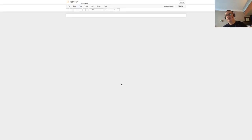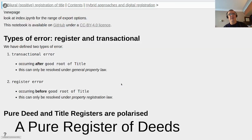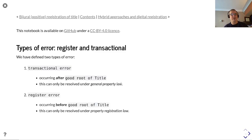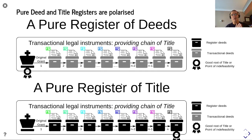We have introduced two deed types: transactional deeds and registered deeds. These result potentially in two types of error: transactional error and register error. Transactional errors occur after the good root of title and can only be resolved under general property law. A register error occurs before the good root of title and can only be resolved under property registration law. This gives us two ways of conceptualizing a pure register of deeds or a pure register of title.